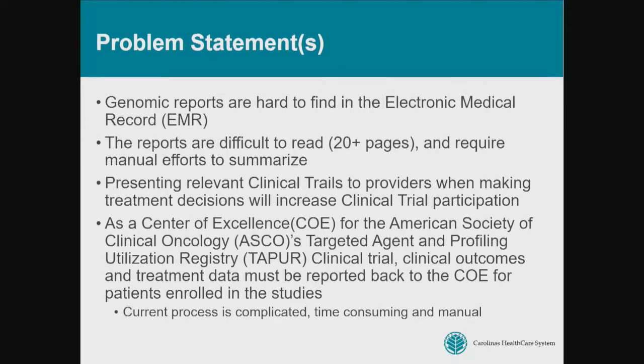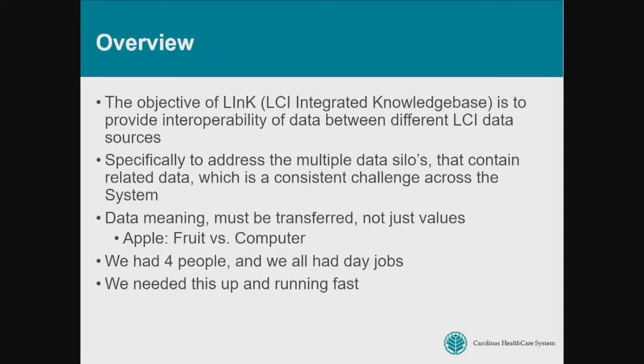The problem statement we tried to solve was genomic reports are hard to find in the medical record. The reports are difficult to read. They're often between 26 and 30 pages long. They require manual effort to summarize. Presenting relevant clinical trials to providers when making treatment decisions will increase clinical trial participation, which was one of our goals for 2020. And as a center of excellence for the American Society of Clinical Oncology's ASCO's targeted agent and profile utilization registry TAPER clinical trial, our clinical outcomes and treatment data has to be reported back to the center of excellence.